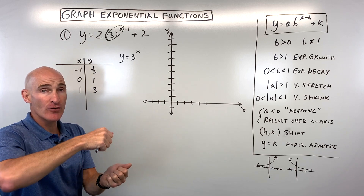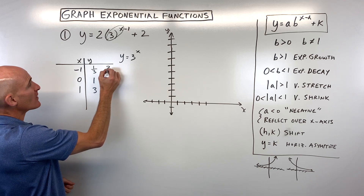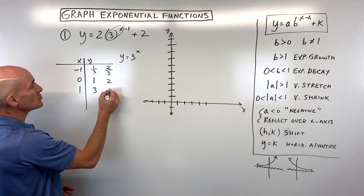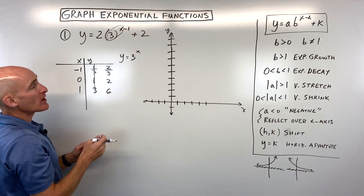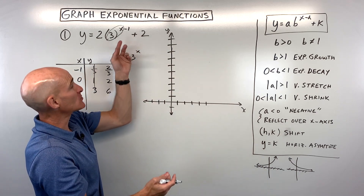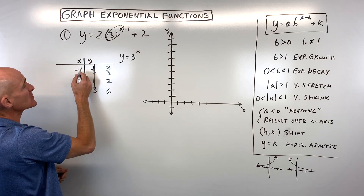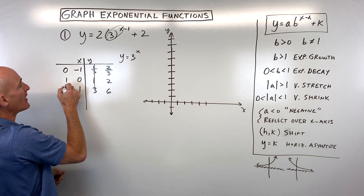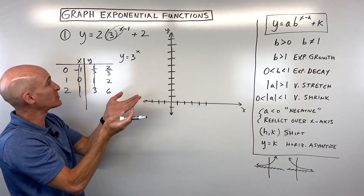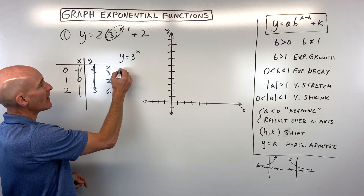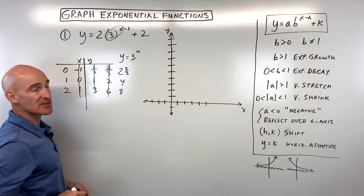The 2 is going to be a vertical stretch by a factor of 2, which multiplies all the y values by 2 — so we get 2 thirds, 2, and 6. Then the minus 1 shifts the graph not minus 1, but to the right 1; it has the opposite effect when it's grouped with the x. Going right 1 means we add 1 to all the x values. Then the plus 2 shifts the graph up 2, so we add 2 to all the y values, giving us 2 and 2 thirds, 4, and 8.